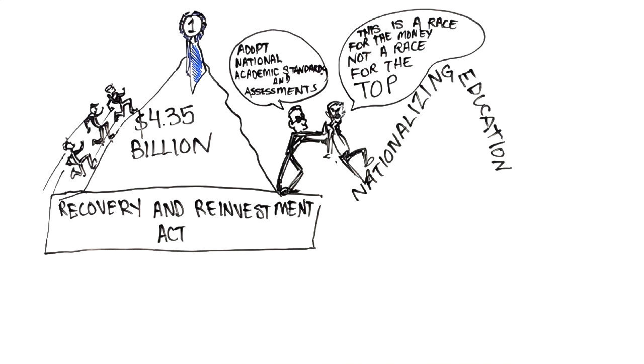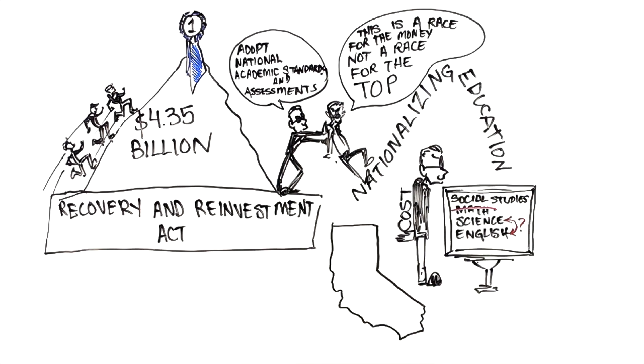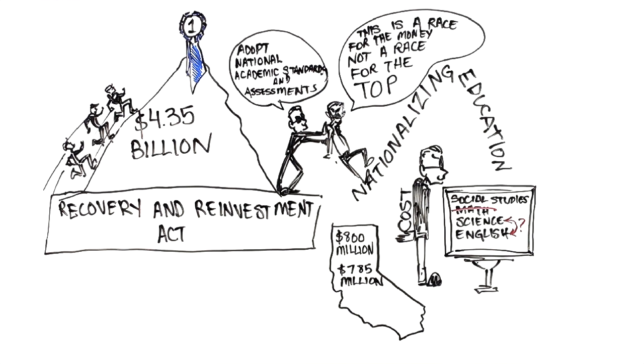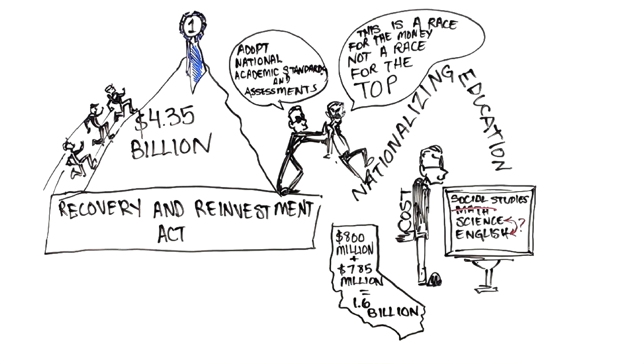Now beyond the obvious ideological problem here, there are hidden costs to the states, which will have to revamp their curricula in order to meet standards. For example, according to one estimate, California will have to absorb $800 million for new curriculum frameworks and $785 million for teacher and principal training, resulting in a total of $1.6 billion to change over to the new national standards.